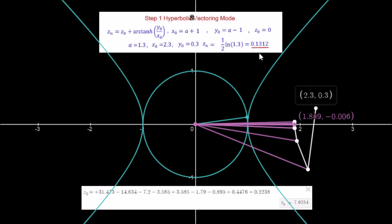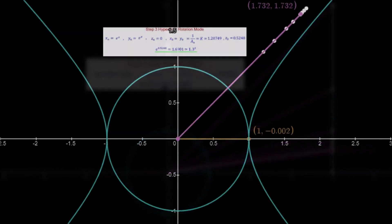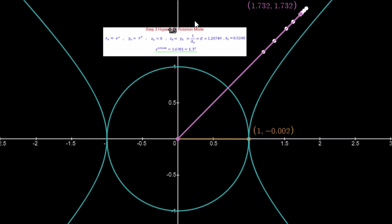I'll put a caption at the end of the video showing the actual values we expect and the simulated values. In step 2, using linear rotation mode to multiply by a factor of 4, we expect 0.5248 but get 0.547. In step 3, using hyperbolic rotation mode to compute e to the power of x, we get a final result of 1.732 against an expected value of 1.6901.